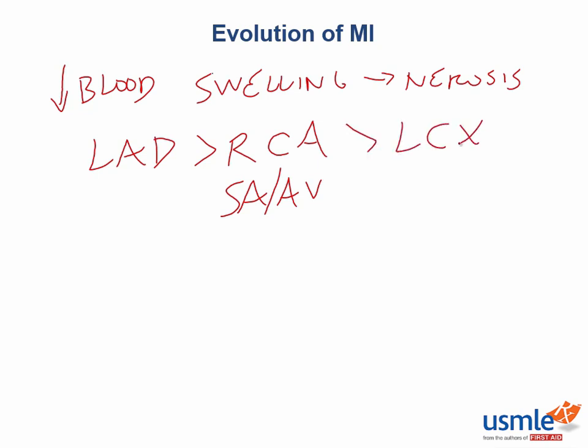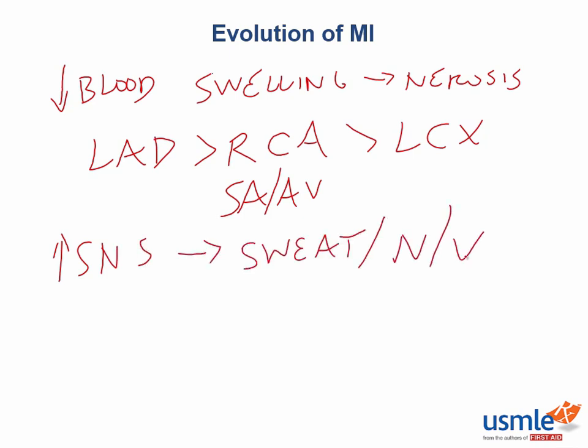The third most common artery to be concerned about is the left circumflex, which comes off the left main coronary. Expect to see signs of excessive sympathetic nervous system activity such as sweating, nausea, and vomiting. These people are in pain, they are afraid, and they are going to activate the sympathetic nervous system.